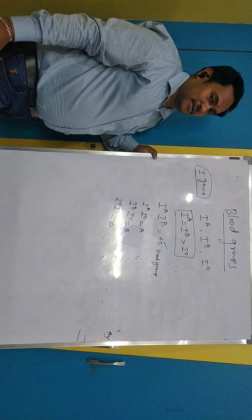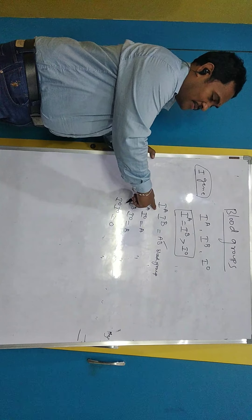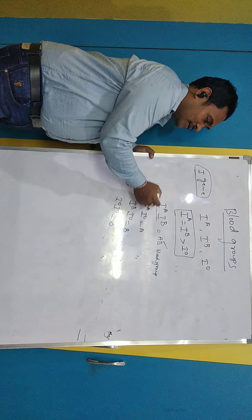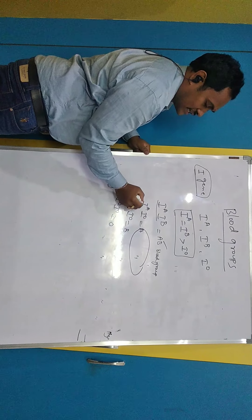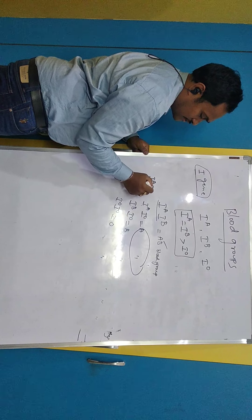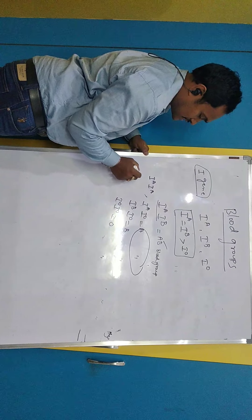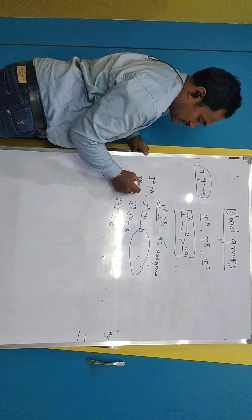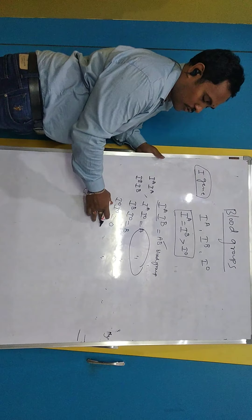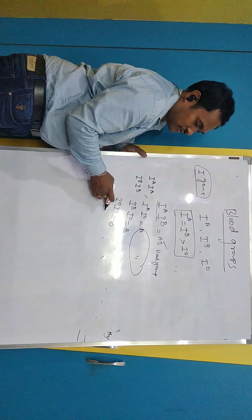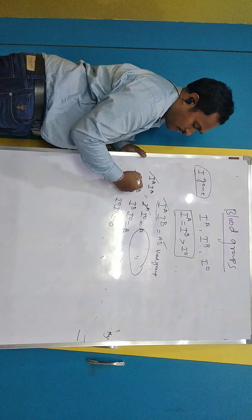There are four phenotypes for blood groups, but what are the different genotypes? AB blood group has only one genotype: IA IB. Blood group A has two genotypes: heterozygous IA IO and homozygous IA IA. Blood group B has two genotypes: heterozygous IB IO and homozygous IB IB. Blood group O has only one genotype: homozygous IO IO. So there are six genotypes in total.